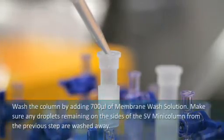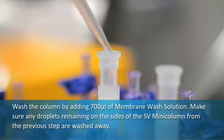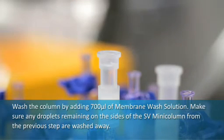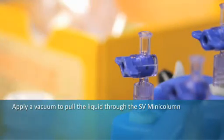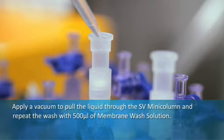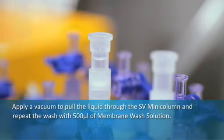Wash the column by adding 700 microliters of membrane wash solution. Make sure any droplets remaining on the sides of the SV mini column from the previous step are washed away. Apply a vacuum to pull the liquid through the SV mini column. Repeat the wash with 500 microliters of membrane wash solution.